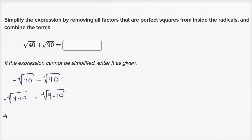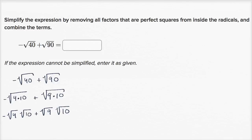This is the same thing as the negative of the square root of four times the square root of 10, plus the square root of nine times the square root of 10. When I say square root, I'm really saying principal root — the positive square root. So the square root of four is two, and the square root of nine is three.